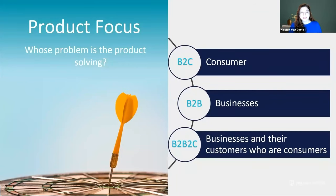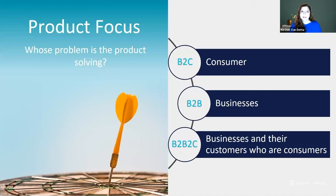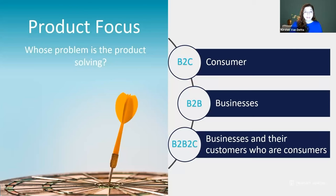The first key difference is product focus — who are you solving for? A B2C product is consumer. B2B is the business. And B2B to C is a business plus their consumer, so their customer's customer. You can have lots of variations of B2B to C, B2B to B — it just depends on what type of customer your customer's customer is.